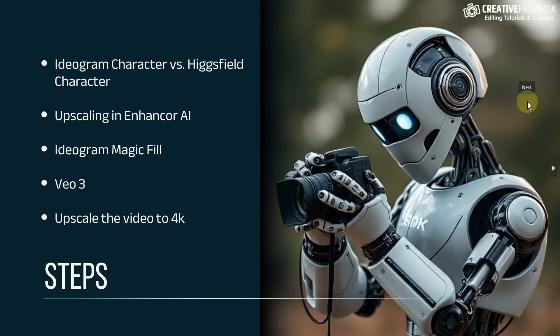This process will involve five different steps. We're going to start off by creating a consistent image from the headshot of the woman either inside Ideogram Character, which was just released a few weeks back, or Hicksfield Character, which was also released a few weeks back. These two are competitors, and whichever gives us the best image we'll proceed to the next step: upscaling inside Enhancer AI to get rid of that AI look and make it look like a proper photograph. Then we'll use Ideogram's Magic Fill to replace the product with our own, turn this into a video inside VO3, and finally I'll show you a tool to upscale the VO3 video to 4K — completely free without any watermark. Let's get started.